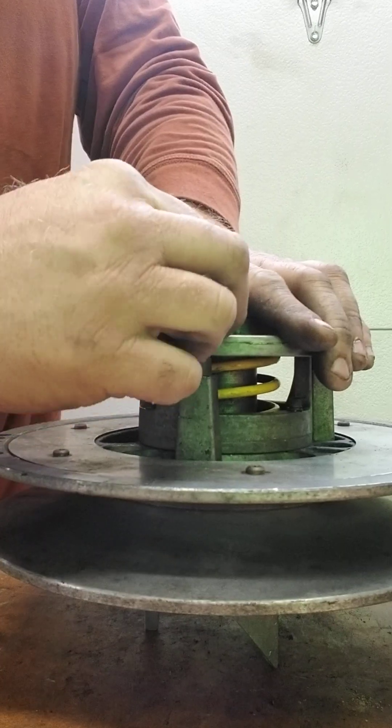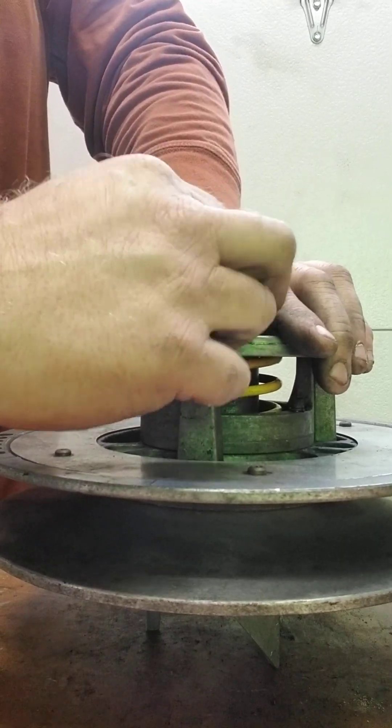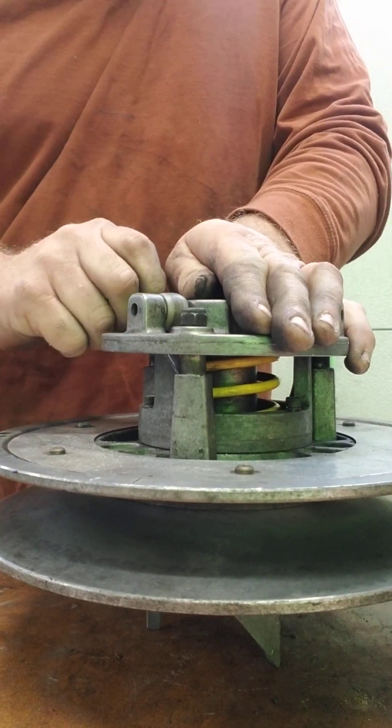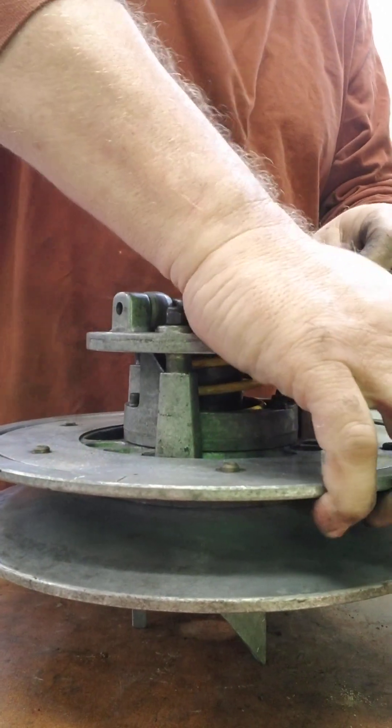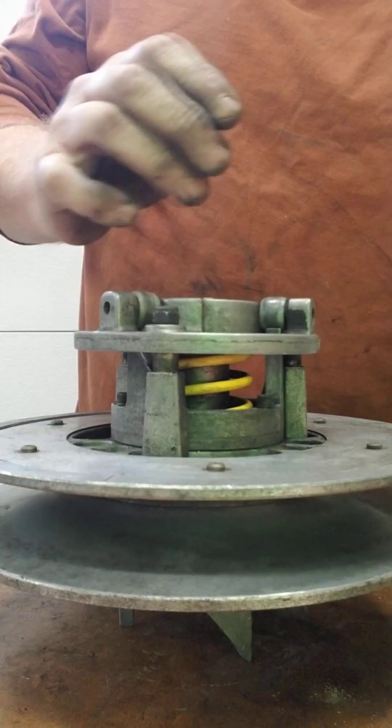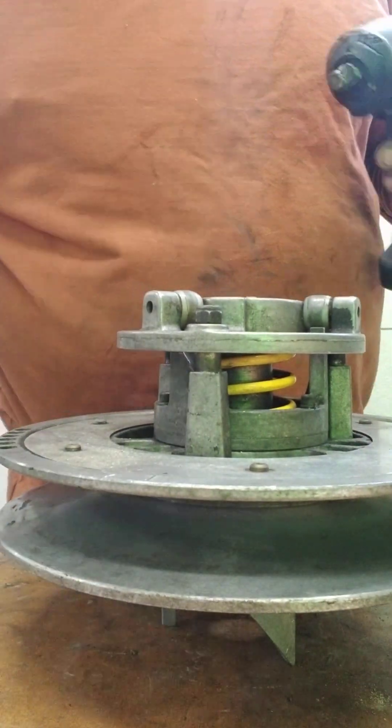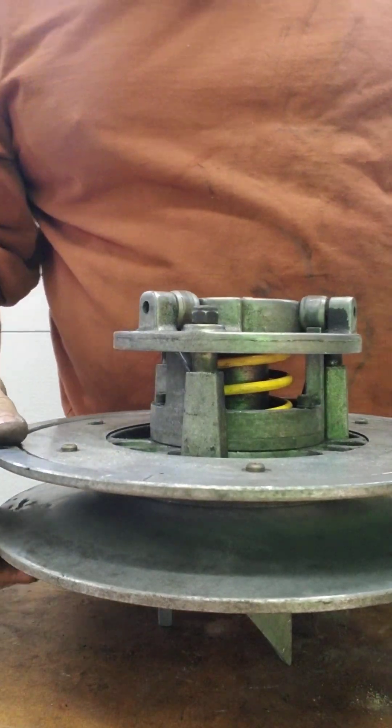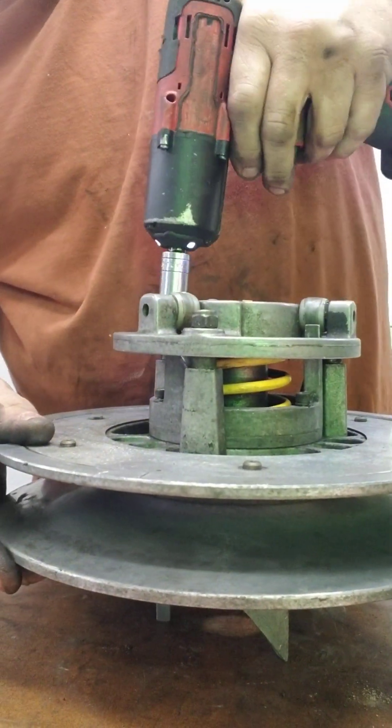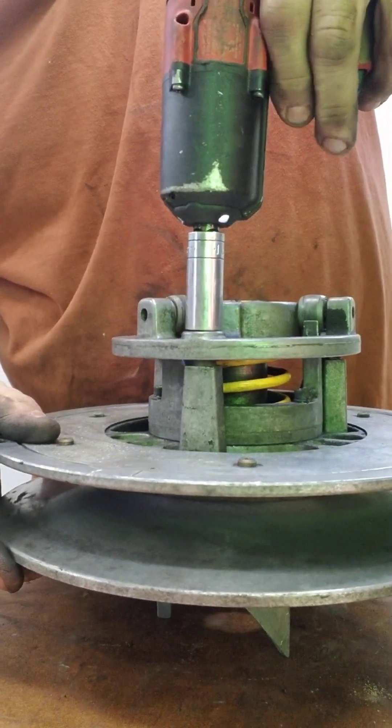And then you put your nuts on. I know this clutch is dirty—I'm just doing it for instructional purposes. It's just a spare clutch I got laying around. And you want to tighten them down uniformly. Don't crank one side.